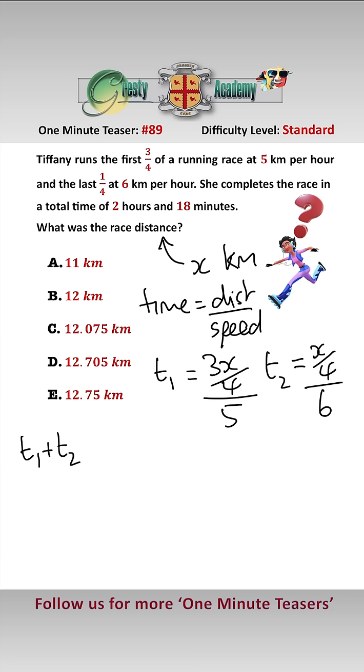Now we know that the total time taken is equal to 2 hours plus 18 minutes, which is 18 over 60 of an hour, which equals 2.3 hours, which equals 3x over 20 plus x over 24.